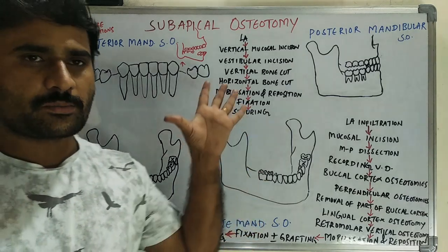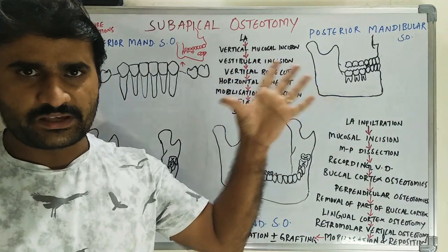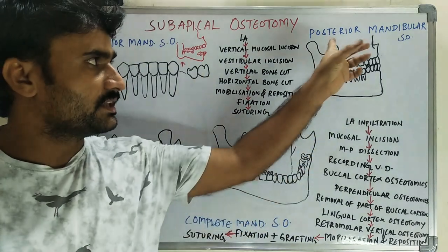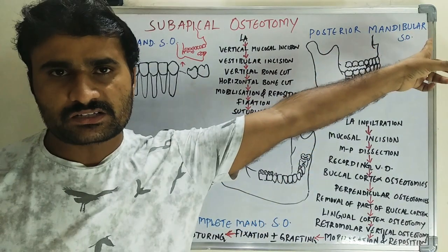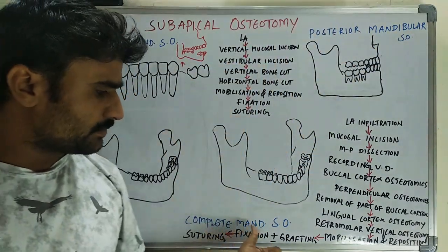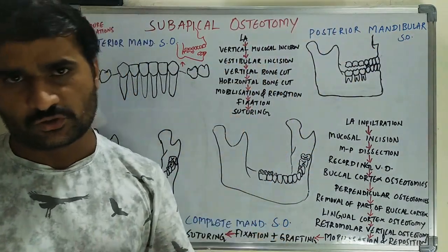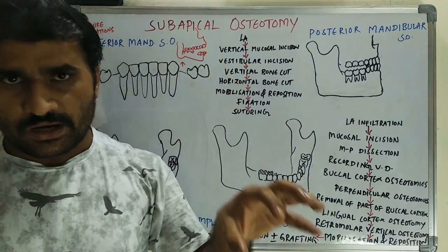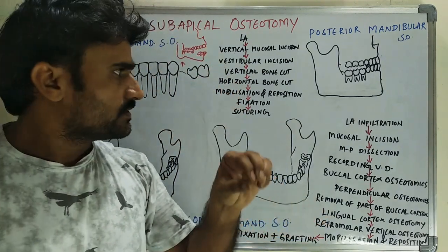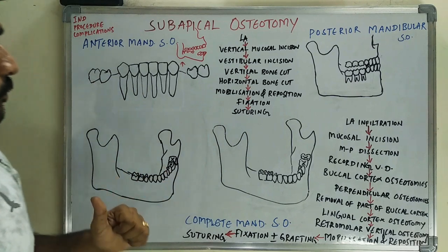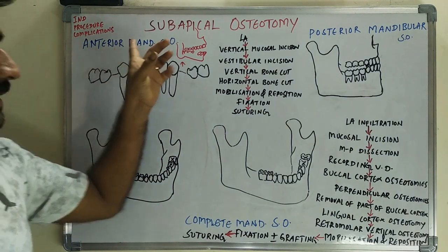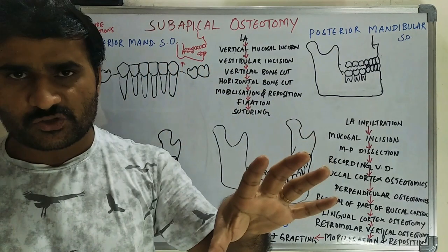In this video we will discuss subapical osteotomy. There are three varieties: anterior mandibular subapical osteotomy, posterior mandibular subapical osteotomy, and complete mandibular subapical osteotomy. Of these, anterior mandibular is generally used and is somewhat more important. For each technique you have to cover indications, procedure, and complications.